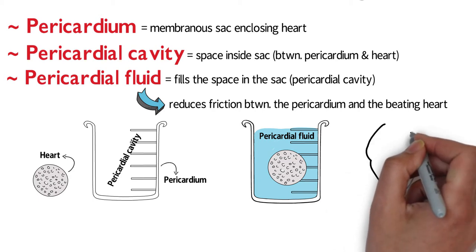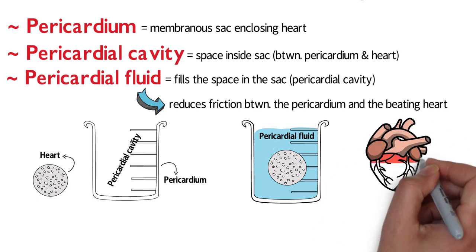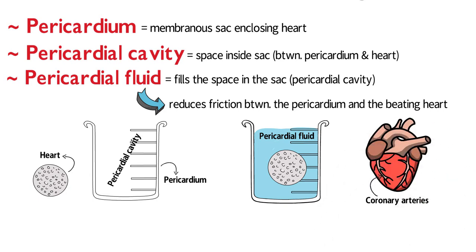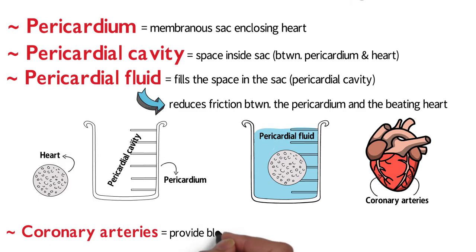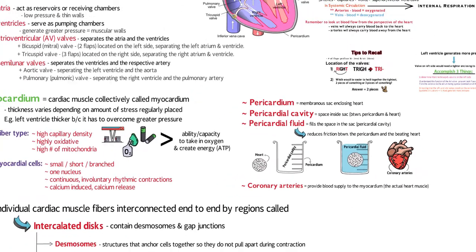How does the heart get its own blood supply? The heart has coronary arteries that provide blood supply to the myocardium — the actual heart muscle itself.